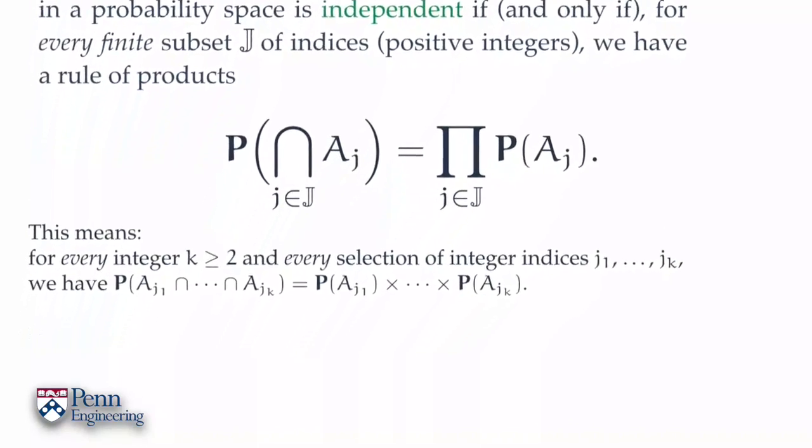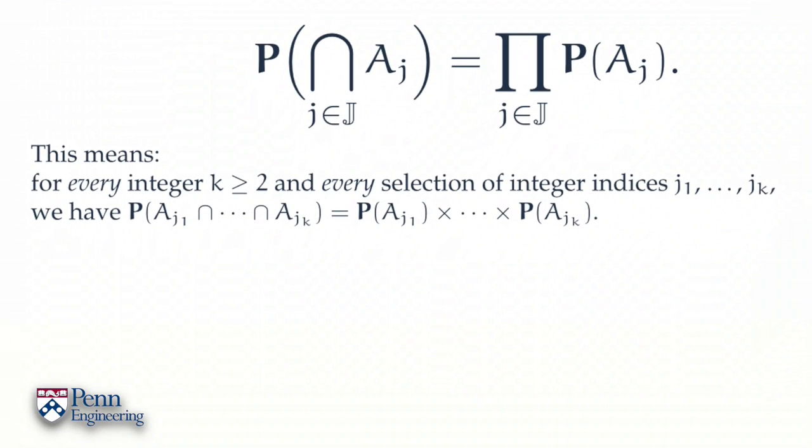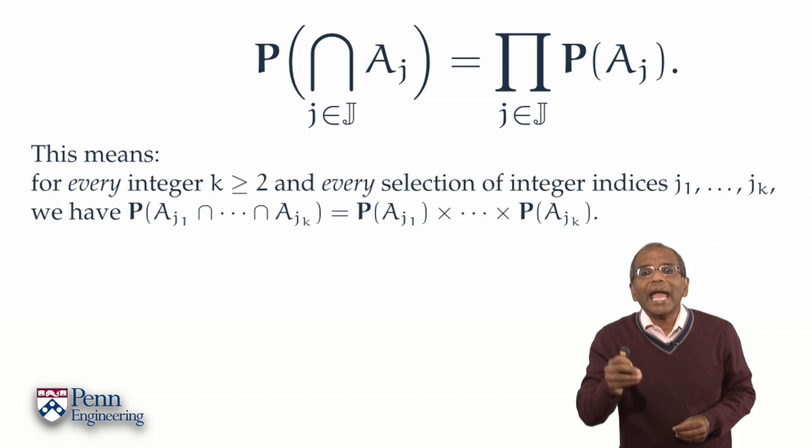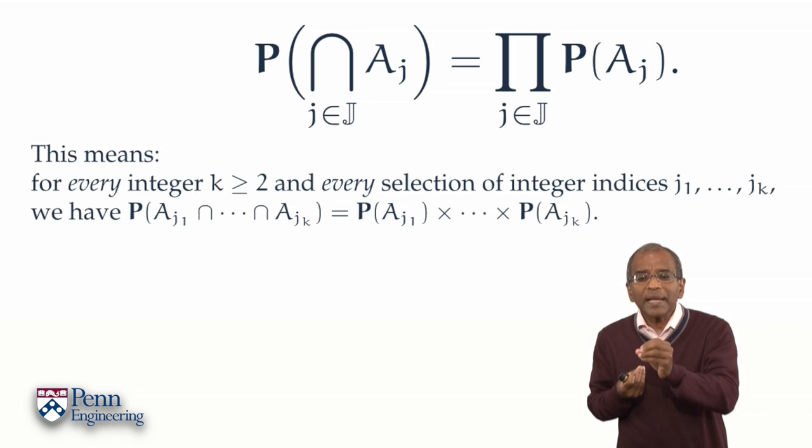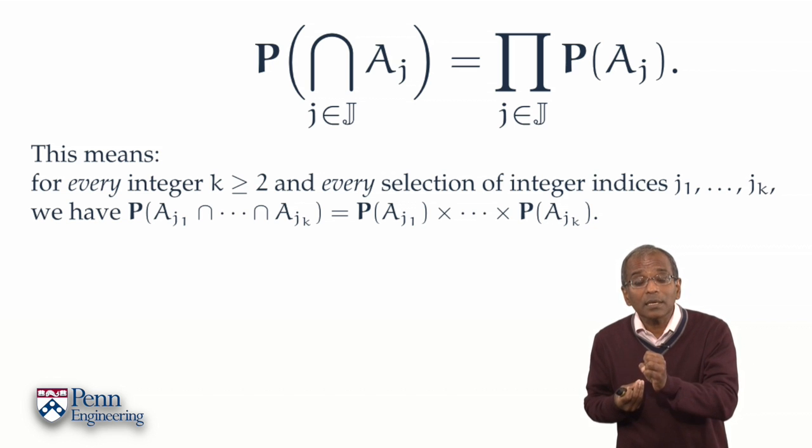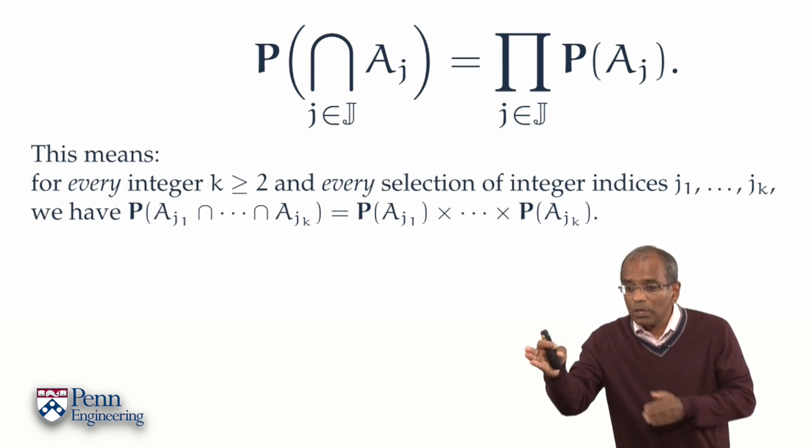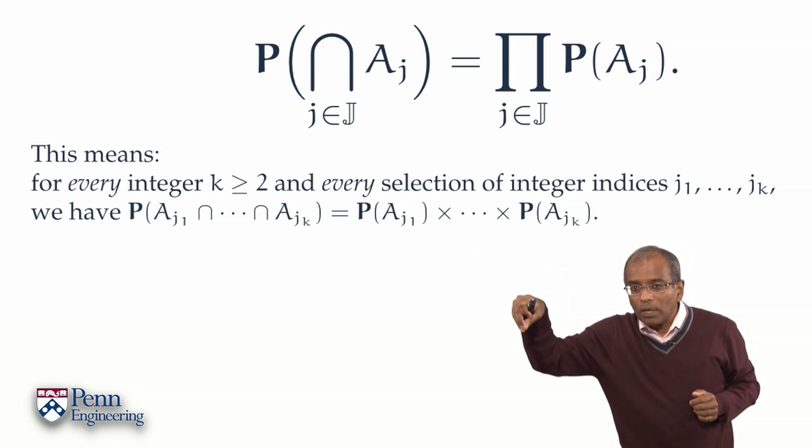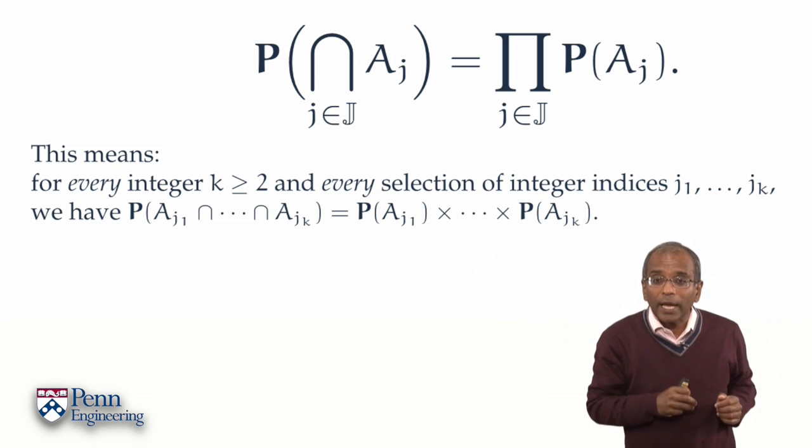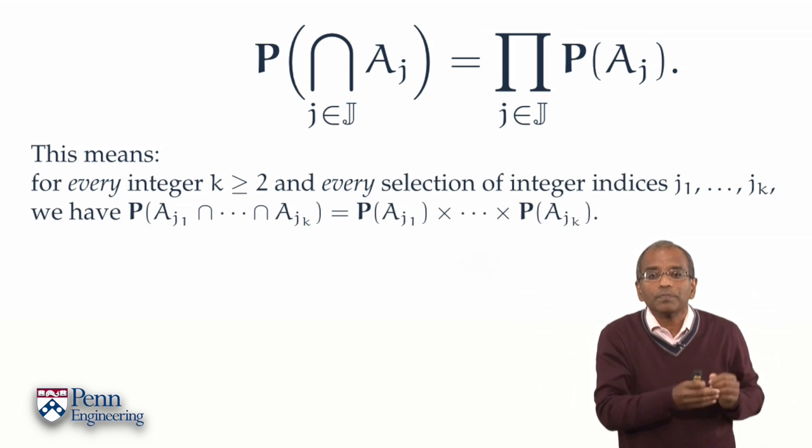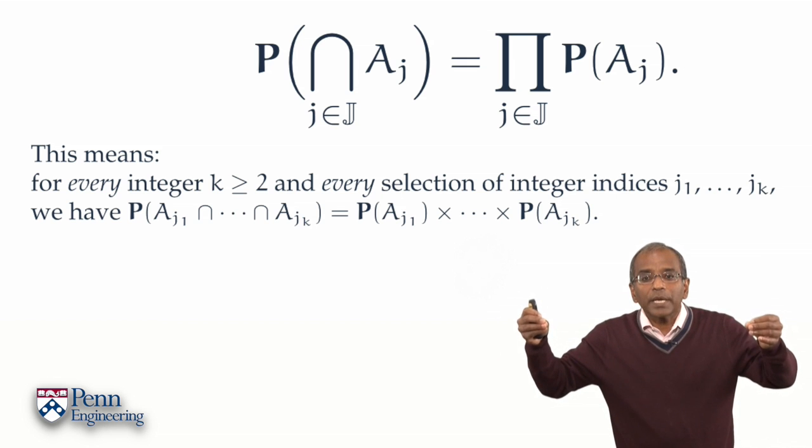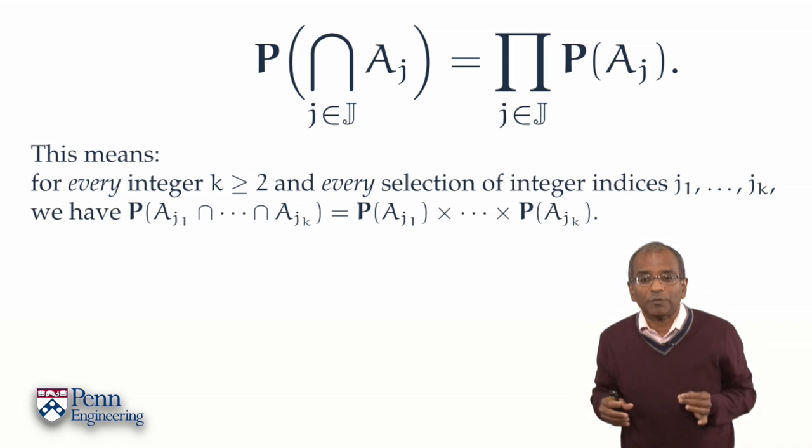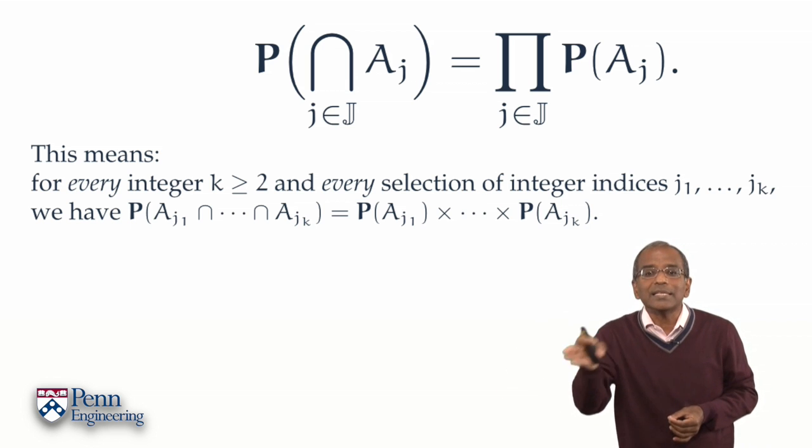Our definition means the following. Pick a family of events A_j, j running through either a finite or an infinite range. The events are independent means that pick any positive integer k. Pick any collection of indices, of k indices from your collection, say j1, j2, j3, and so on, jk. Look at the probability of the intersection of all those k events. That intersection probability must be the product of the individual probabilities. And this statement must hold for every choice of k, and for every collection of k indices that you can select from your group.